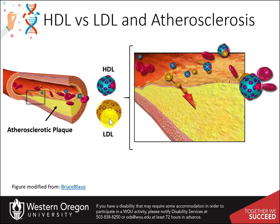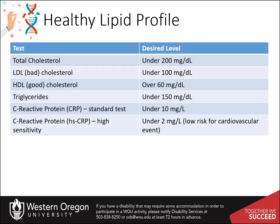Small, dense LDL particles have a decreased affinity for the LDL receptor, resulting in prolonged retention time in the circulation. Additionally, they more easily enter the arterial wall and bind more avidly to intra-arterial proteoglycans, which traps them in the arterial wall. Finally, small, dense LDL particles are more susceptible to oxidation, which could result in enhanced uptake by macrophages. HDL particles remove cholesterol from circulation and are thought to be anti-atherogenic. In addition, HDL particles have antioxidant, anti-inflammatory, anti-thrombotic, and anti-apoptotic properties, which may also contribute to their ability to inhibit atherosclerosis.